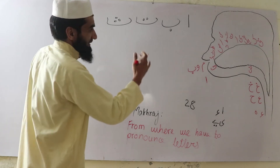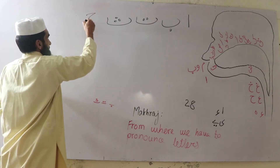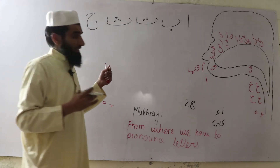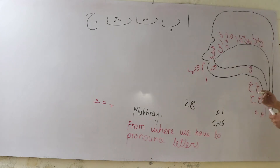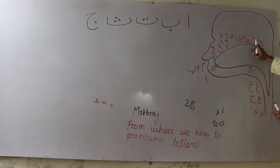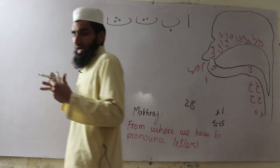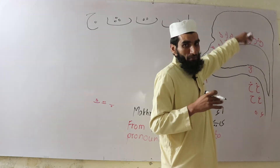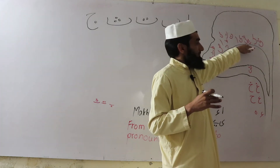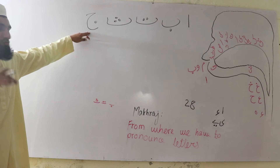The fifth letter is Jeem, like J in English. Its Makharaj is when the mid part of the tongue touches the upper flat part of the mouth in a flat condition: Jeem. Its recognition is one dot downside.